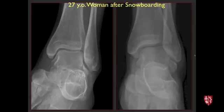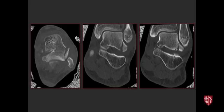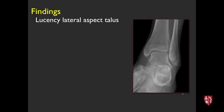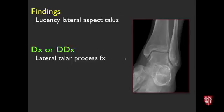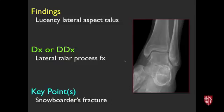Next case, young woman with a snowboarding injury. Radiographs of the ankle may show a subtle lucency; CT confirms a definite lucency at the lateral aspect of the talus involving the lateral talar process — a so-called snowboarder's fracture. This injury is associated with snowboarding and similar activities. It can be easy to miss on plain film, so awareness of this injury pattern is important.